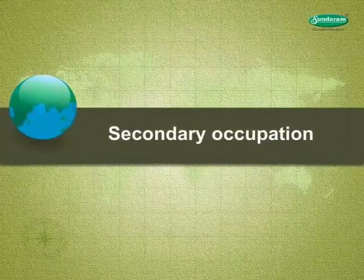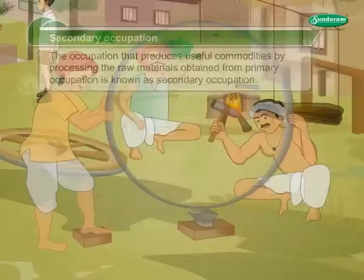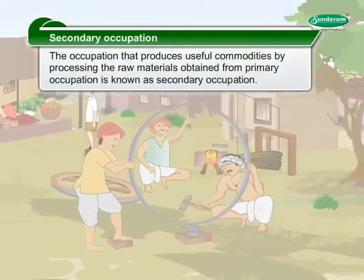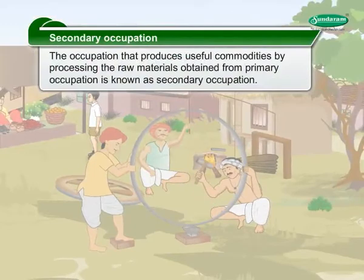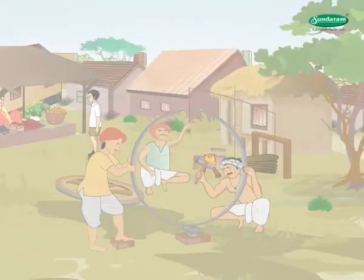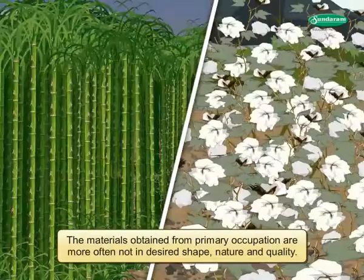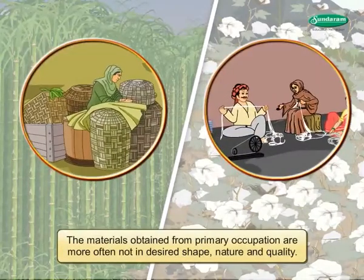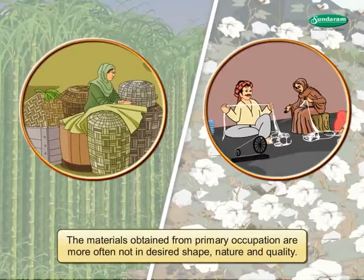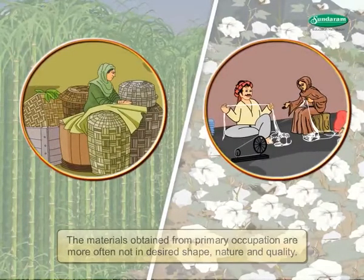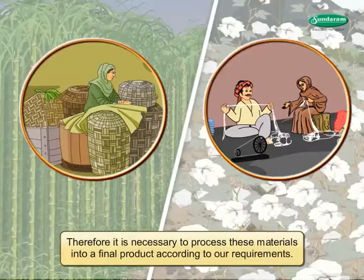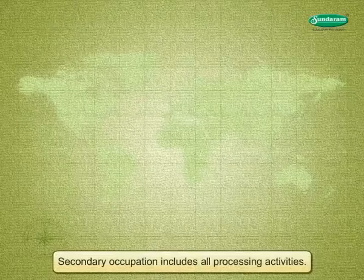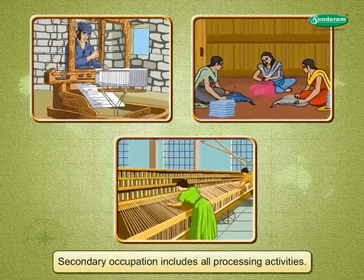Secondary Occupation. The occupation that produces useful commodities by processing the raw materials obtained from primary occupation is known as secondary occupation. The materials obtained from primary occupation are more often not in desired shape, nature and quality. Therefore, it is necessary to process these materials into a final product according to our requirements. Secondary occupation includes all processing activities.